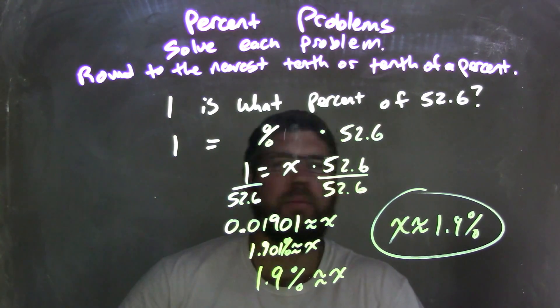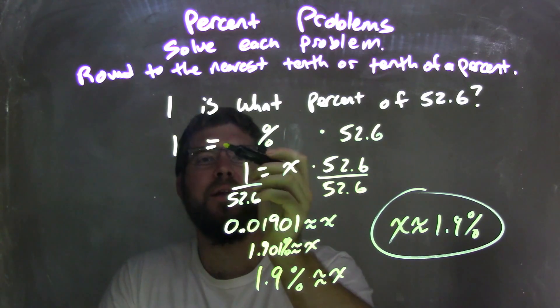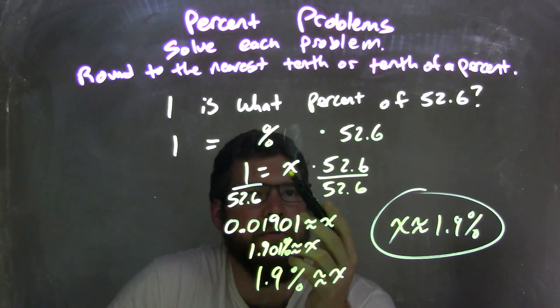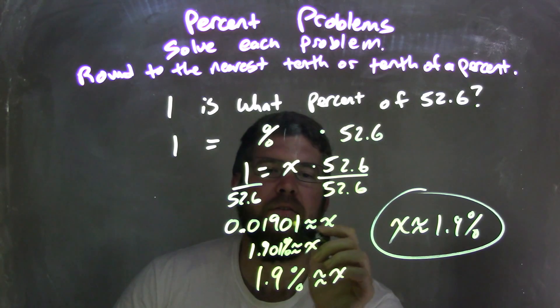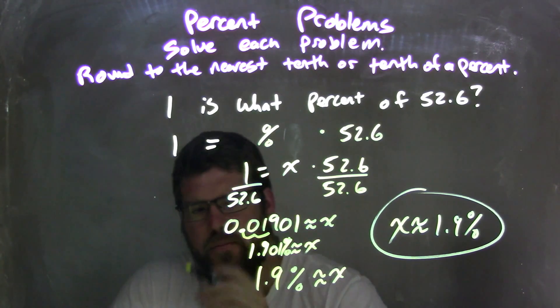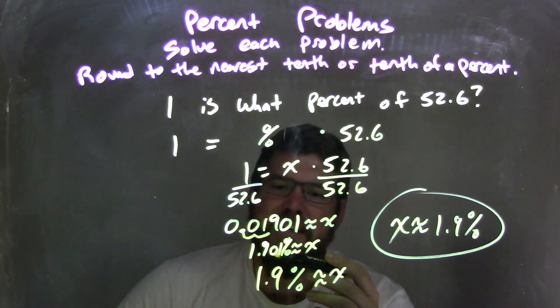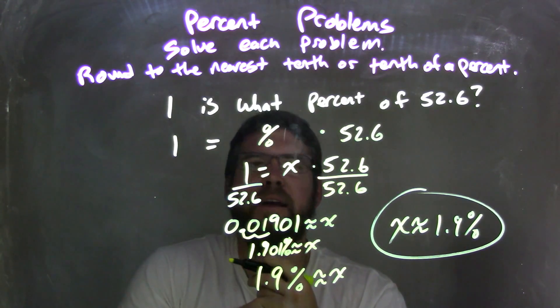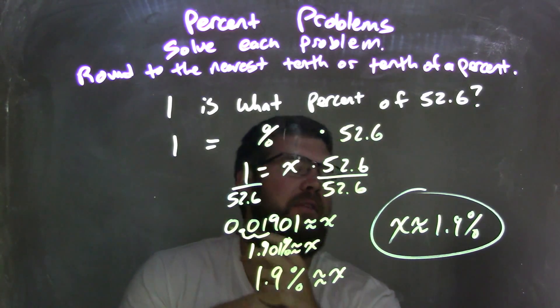Let's recap. We started with 1 is what percent of 52.6? I wrote that as 1 equals x times 52.6, then divided both sides by 52.6 to get 0.01901 approximately equal to x. I converted that to a percent by multiplying by 100, giving 1.901%. Then rounded to the nearest tenth to get x approximately equal to 1.9%. So to answer the question: 1 is 1.9% of 52.6.